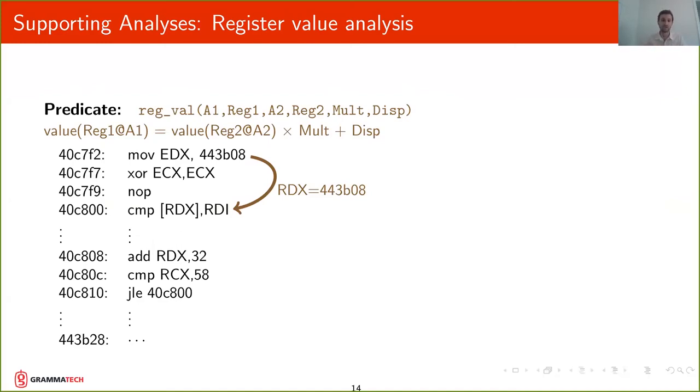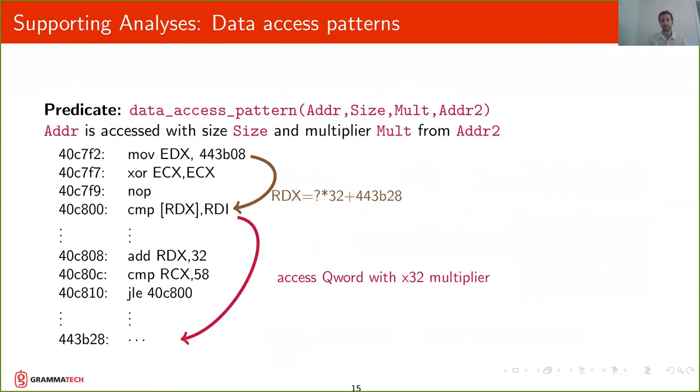We have a register value analysis that relates the value of a register at some address with the value of another register at a different address, multiplied by some multiplier plus some displacement. And this can capture simple relationships such as RDX has a constant value, but it can also capture more complex relationships such as RDX can be some value multiplied by 32 plus some constant.